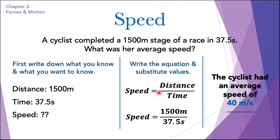The second step is to write the equation and substitute the values. Using speed = distance/time, we substitute 1500 for distance and 37.5 for time, divide these two values, and find the speed. The answer should be written in a sentence: the cyclist had an average speed of 40 meters per second. Don't forget to write the units — they are very important.